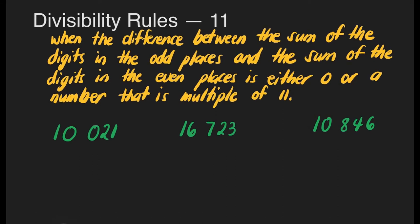Our first number is 10,021. We can say that this one is in the odd place, this is in the even place, this is in the odd place, and then this is in the even, and this is in the odd. All we need to do is to add 1 plus 0 plus 1, and that is 2. How about here? This is 0 plus 2, that is 2.